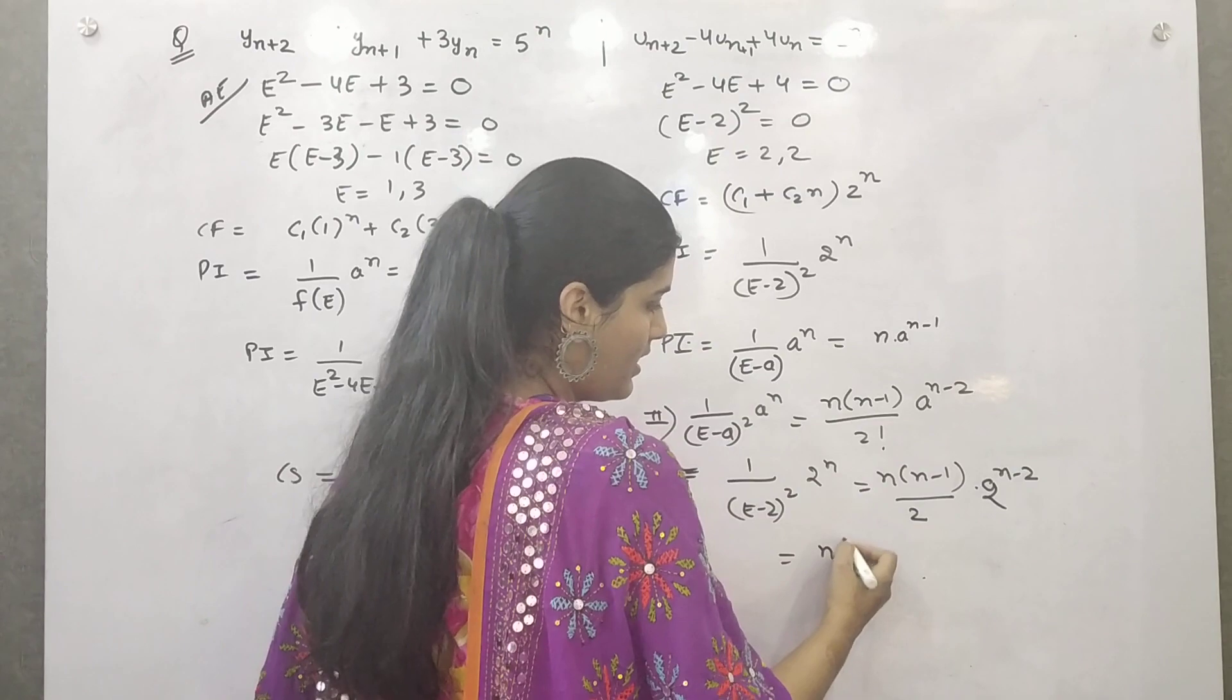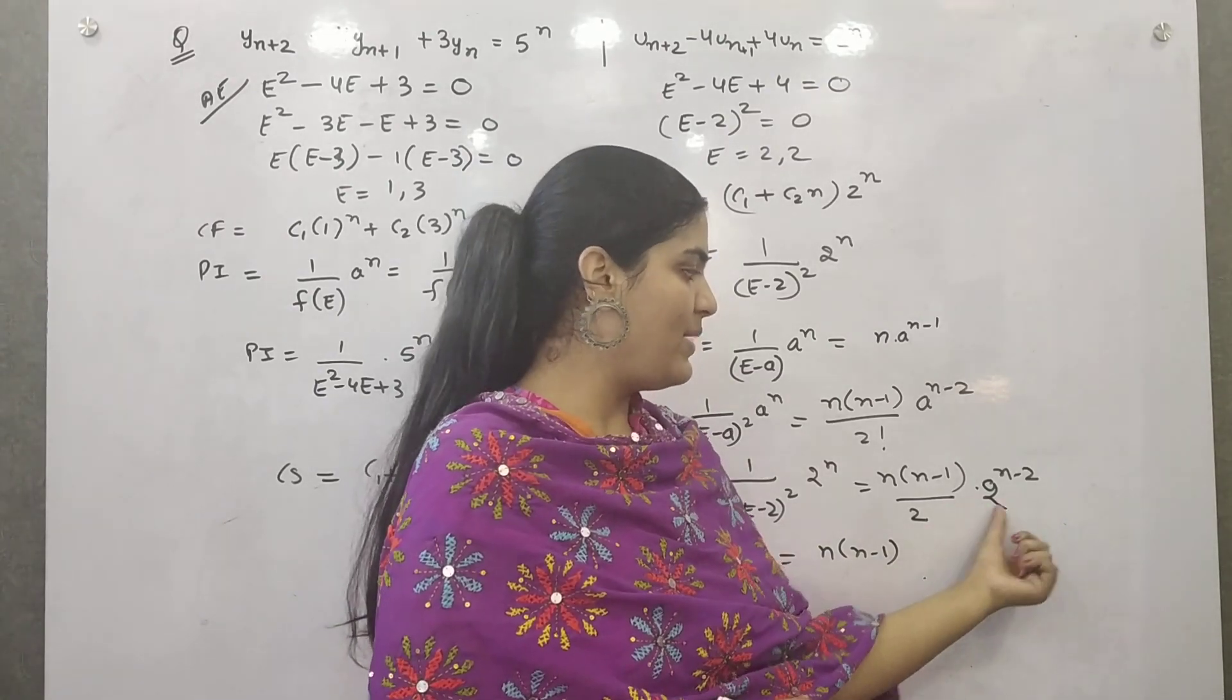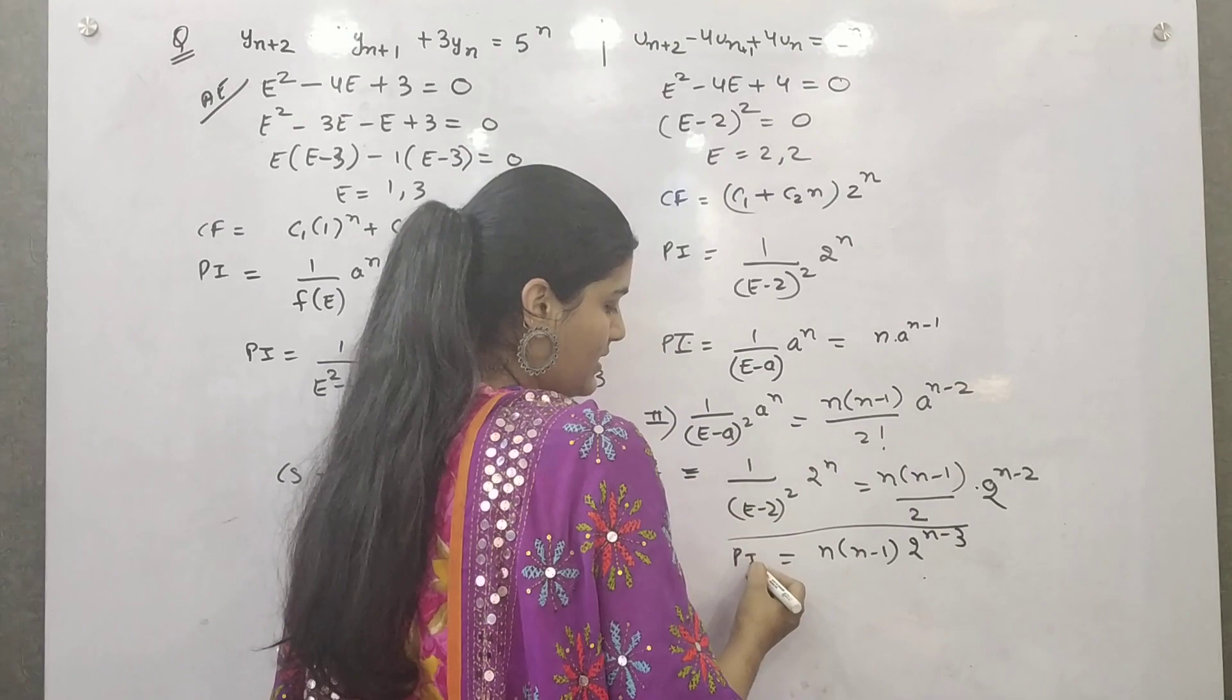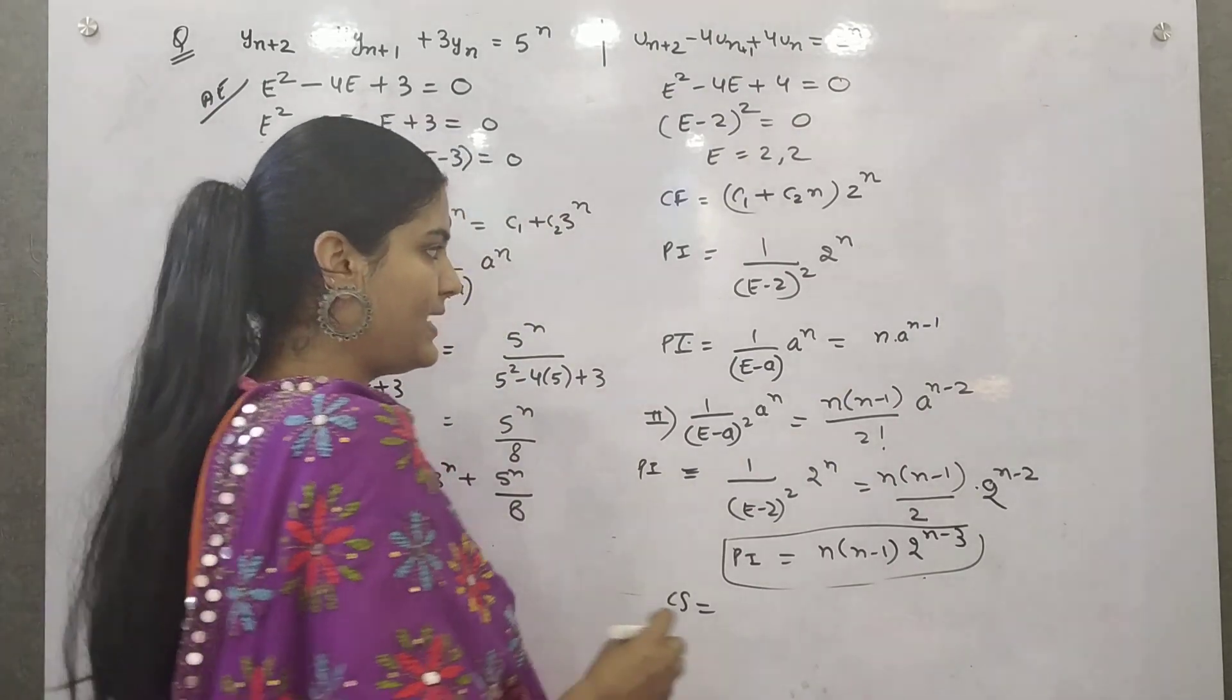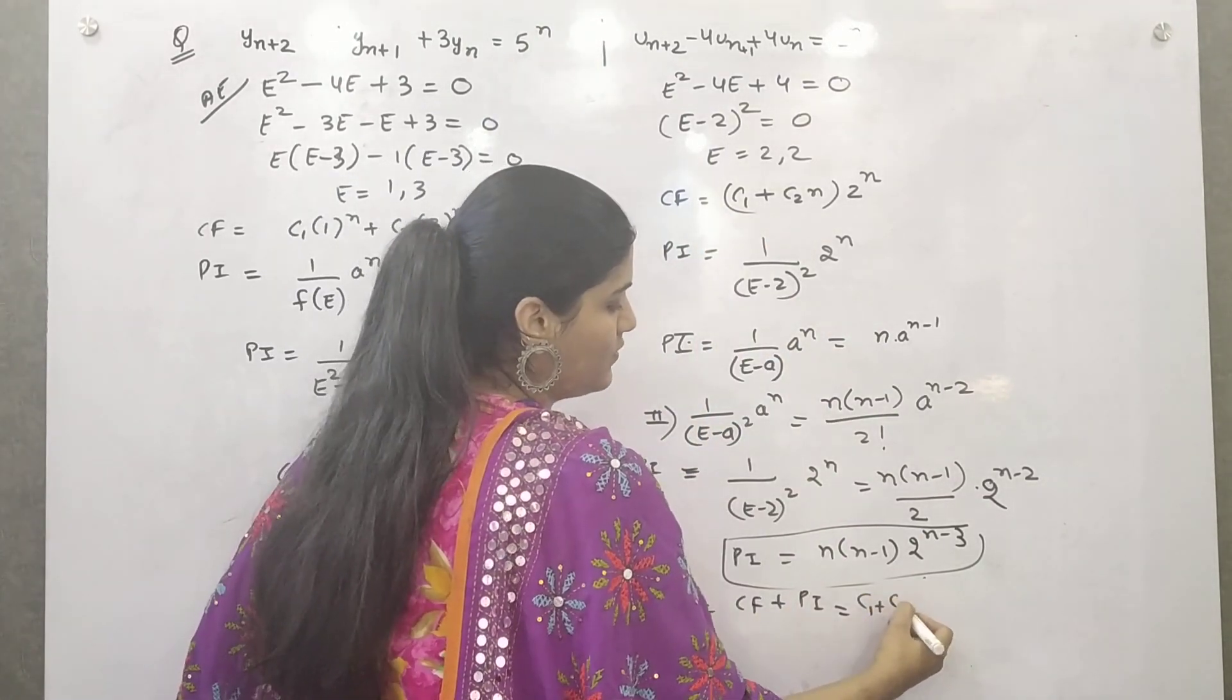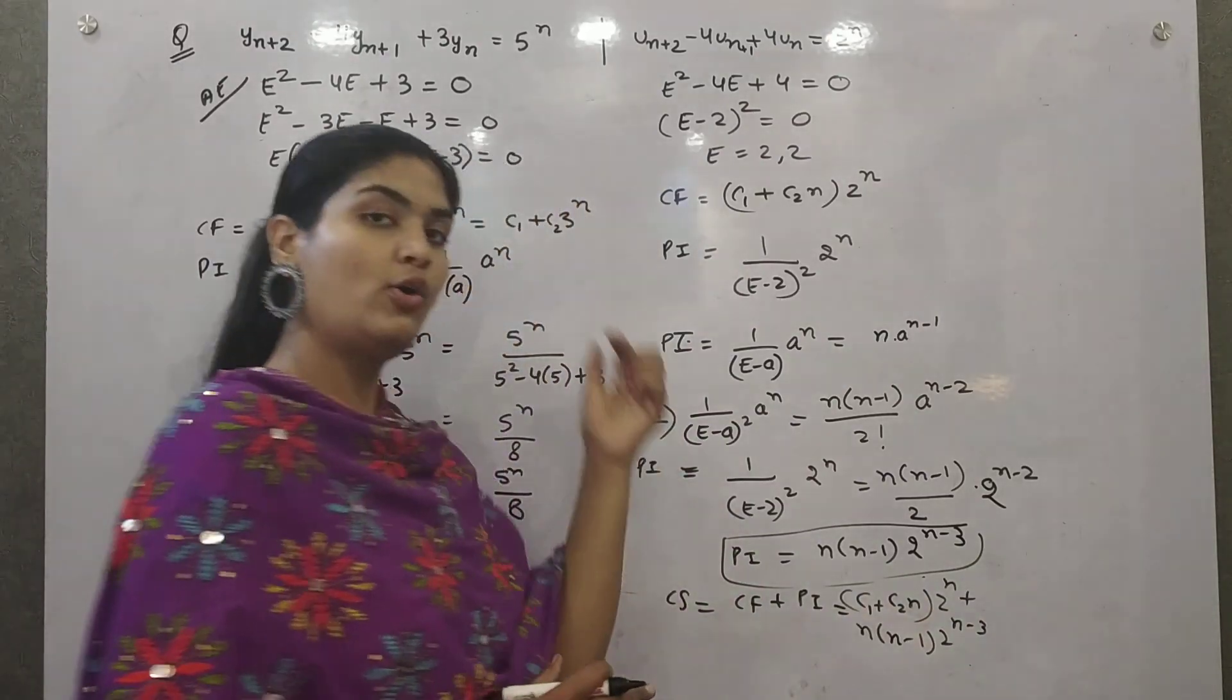And if you simplify it more, n into n minus 1. Base same in dividend form, when you divide something, base same, powers are subtracted. So n minus 2 minus 1 is n minus 2. This is your particular integral. So when you find out complete solution, what would it be? Complementary factor plus particular integral. Your complementary factor is C1 plus C2n times 2 raised to power n, plus particular integral is n times n minus 1 times 2 raised to power n minus 2. I hope you got this topic.